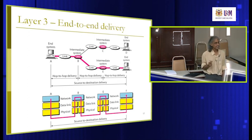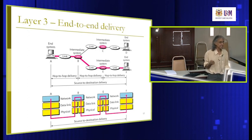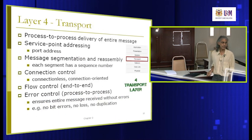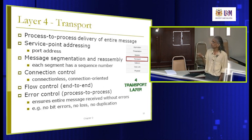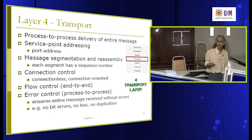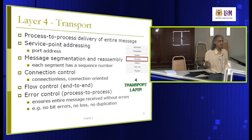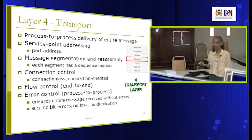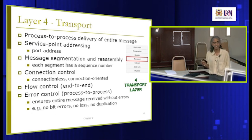IP address is only in layer 3 — only layer 3 can know whether data has reached its destination. Layer 4 is responsible for making sure large data is delivered correctly and in the correct sequence. Large data is broken up into blocks or segments, put into sequence with a sequence number, and must arrive at the destination layer 4 also in proper sequence. Port addresses are used to identify different services or applications running on a particular server.